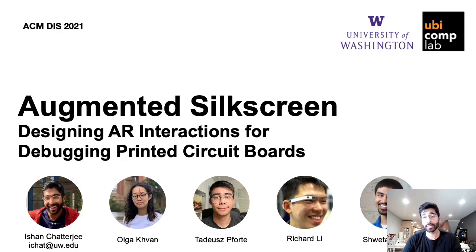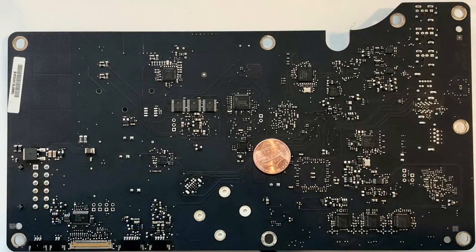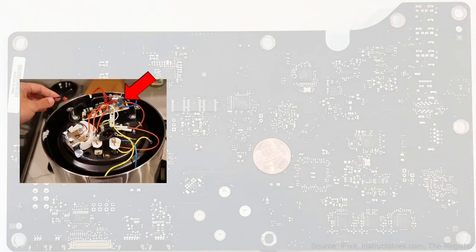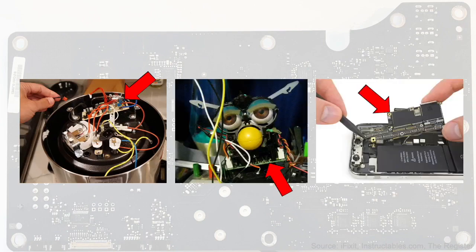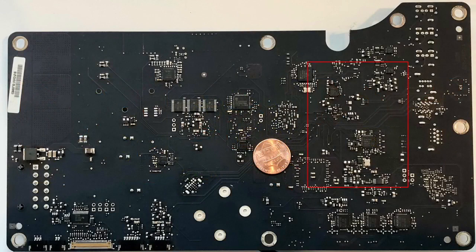In this paper, we looked at designing augmented reality interactions for electrical engineers and technicians to assist them in debugging printed circuit boards. A printed circuit board, or PCB, is a sheet of fiberglass with buried conductive paths to connect electrical components in the same way that wires connect components on a breadboard. There are actually likely dozens of PCBs in the room you're in right now — they're in everything from Instapots to Furbies to the phone or laptop you're watching this on. Here's a PCB I took out of an Apple Thunderbolt monitor.